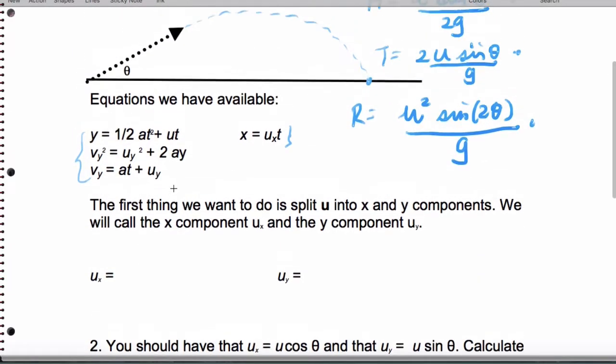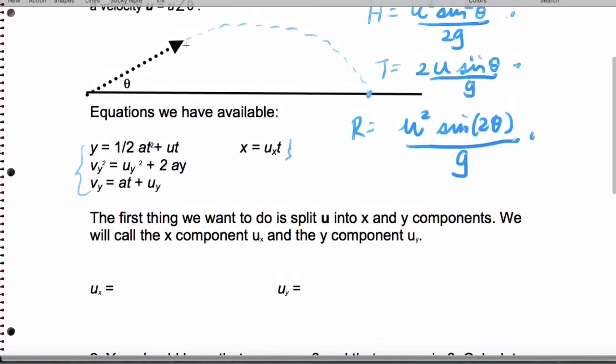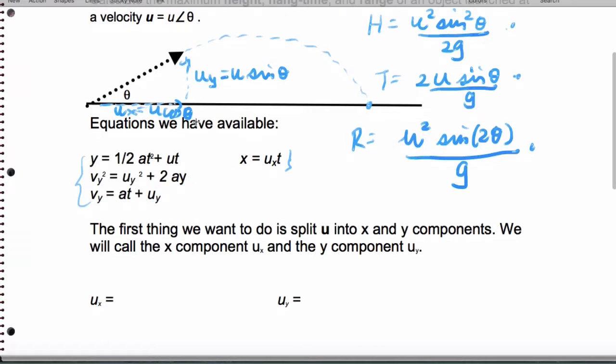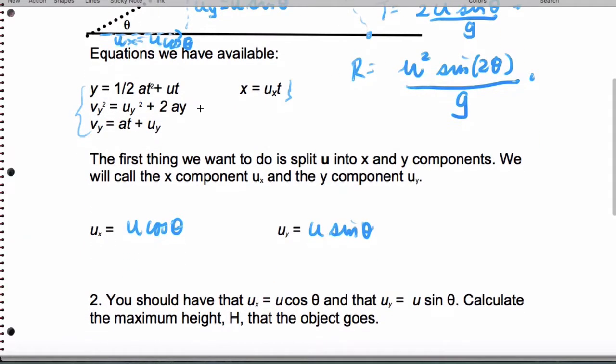The first thing is to split into components using the vector idea. Look at the previous video on the Haiku page to understand what we're doing. uy is going to be u sine theta, and ux is going to be u cosine theta, and we're going to use that to come up with the equations. That's the launch speed split into the x part and the y part.